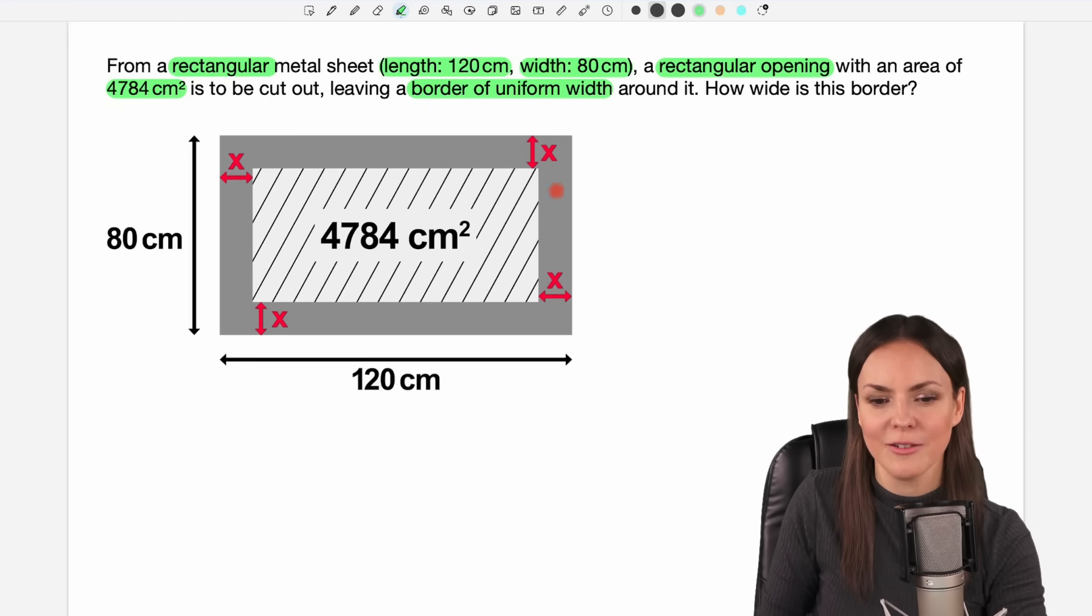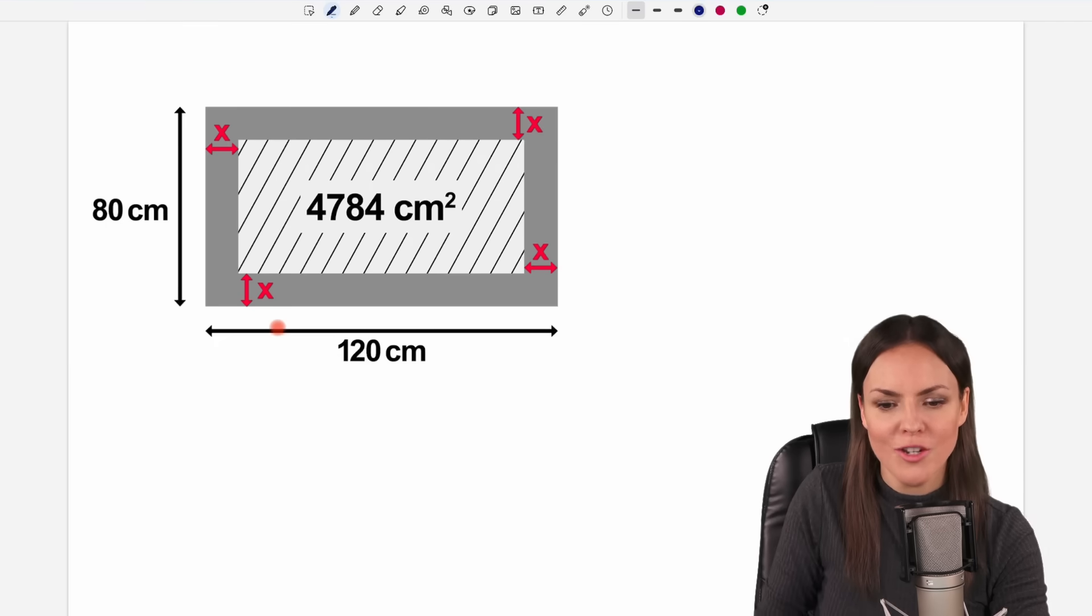Let's take a look at our picture here where we see this rectangular metal sheet of length 120 with 80. Here in the middle we have this area that is cut out and we have to find the width of this border around here so we have to find the length of x.